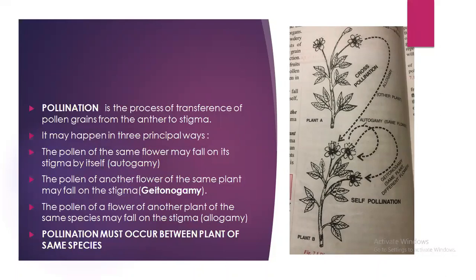As you can see in this picture, the transfer of pollen grains may fall on the stigma of the same flower — that is called autogamy. The pollen of another flower of the same plant may fall on the stigma — that is called geitonogamy. The pollen of a flower of another plant of the same species may fall onto the stigma — that is called allogamy. Pollination must occur between plants of the same species.